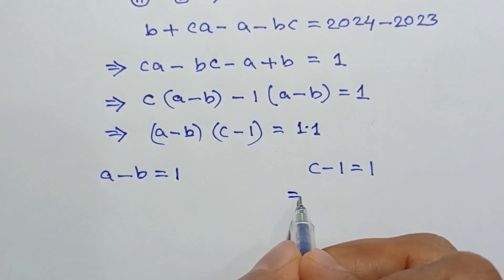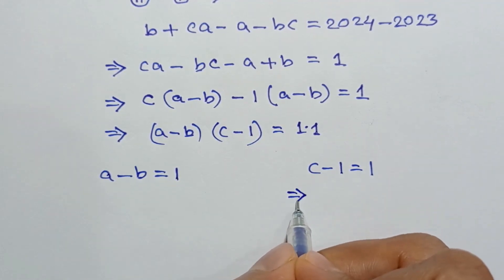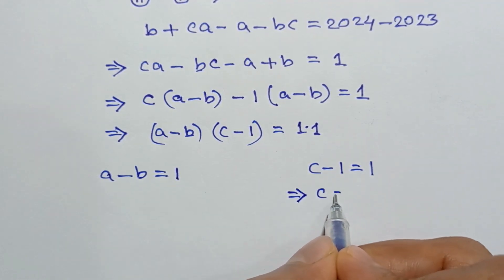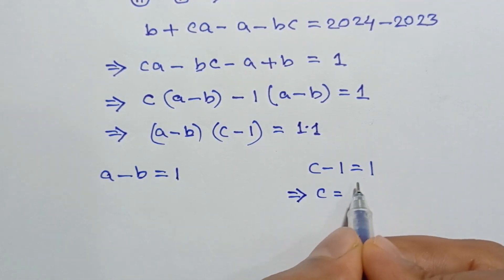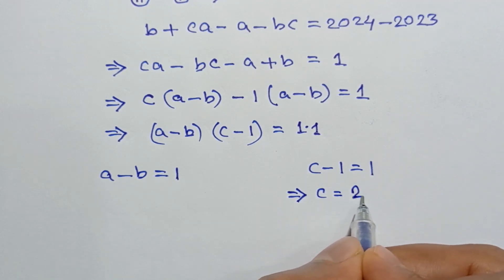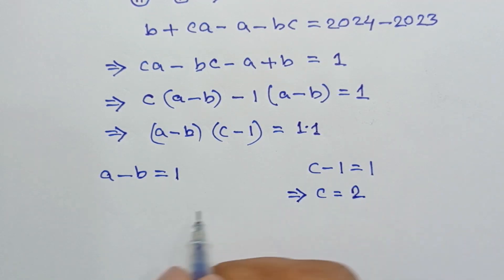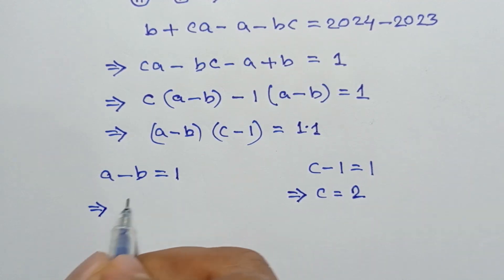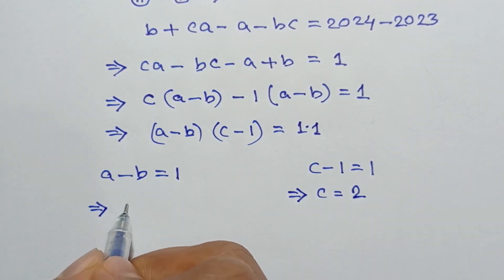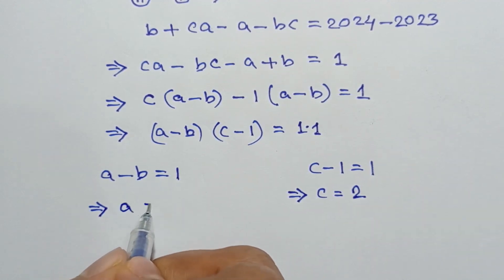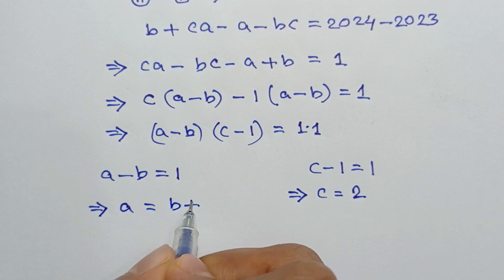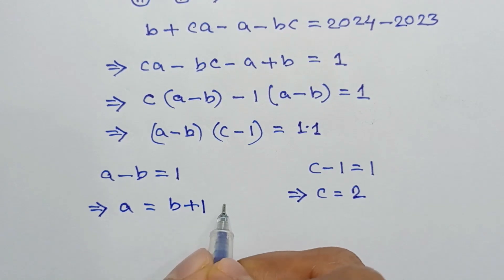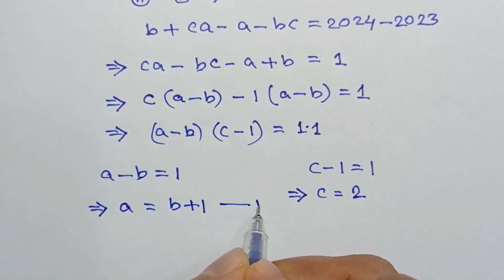From c minus one equals one, we get c equals one plus one equals two. And from a minus b equals one, taking b to the right side, we can write a equals b plus one — call this equation number three.